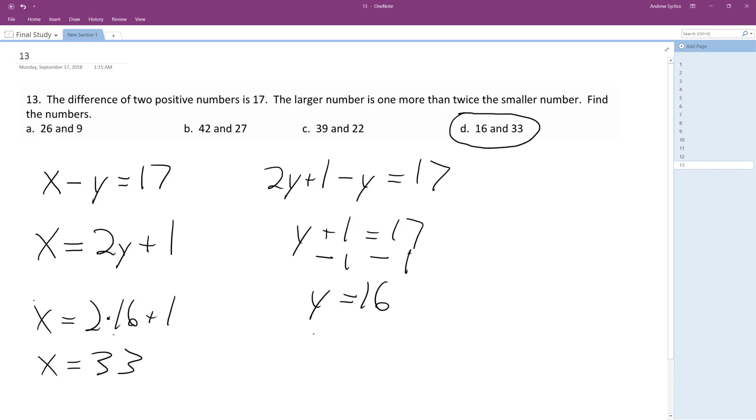But let's test this out. So twice 16 plus 1 equals 33, and then 33 minus 16 does equal 17. Okay, 16 and 33, answer D is the solution.